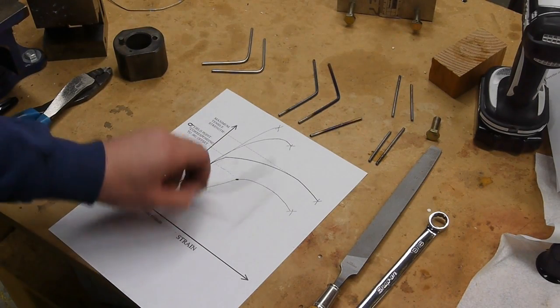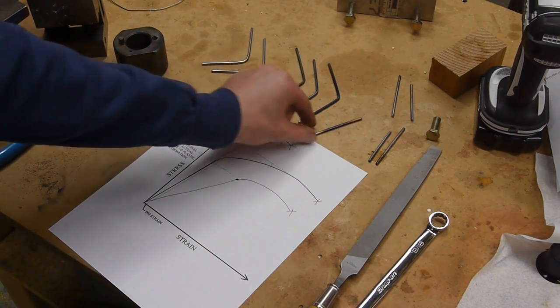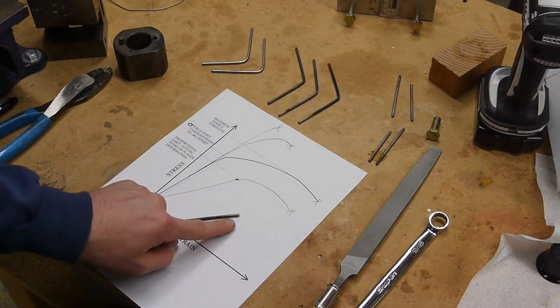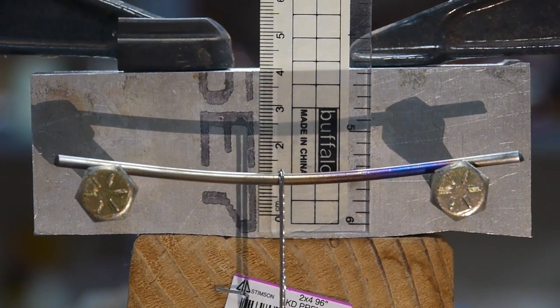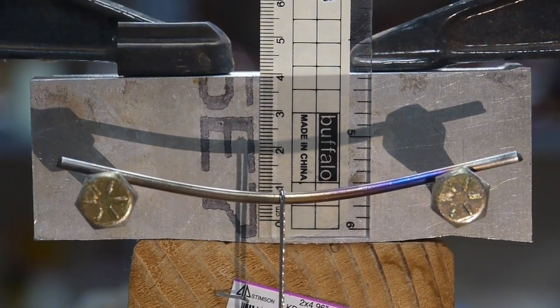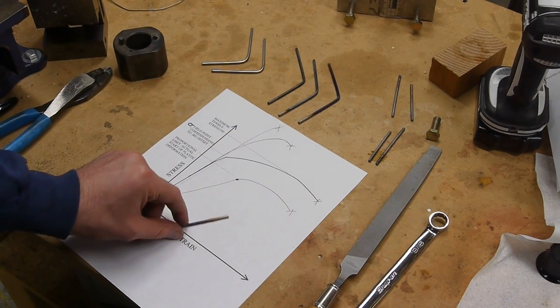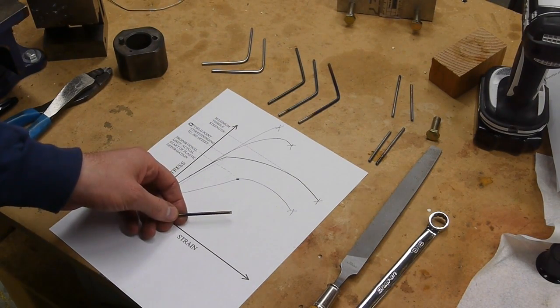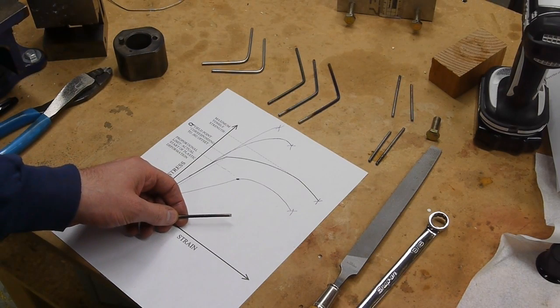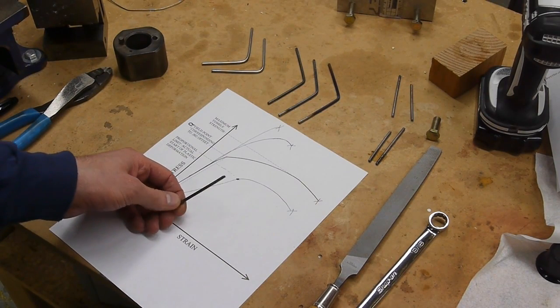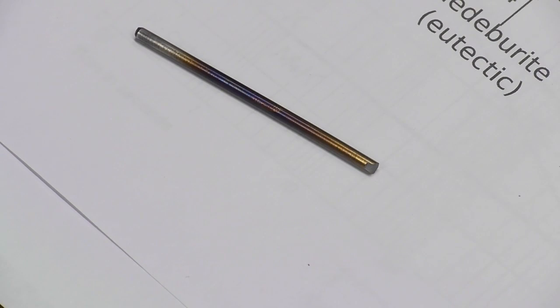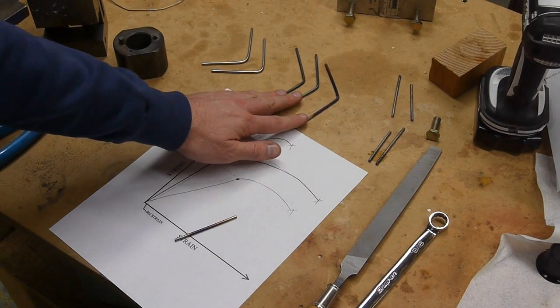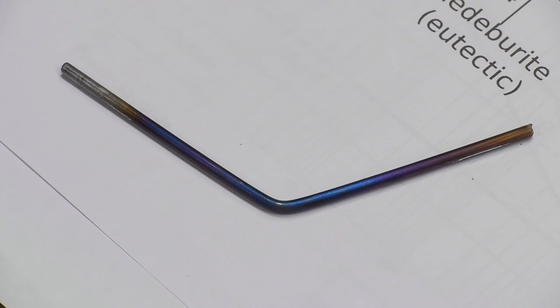The results for the other tempered pieces were pretty similar, except for this one. This one I tempered only to straw yellow, which is less tempering, which means more brittle and stronger. I stopped recording how much weight these things held because my system was woefully inadequate. But what was interesting is that this one broke in a brittle sort of a fracture, whereas these other tempered pieces that were tempered to higher temperatures did not break like that. These yielded.